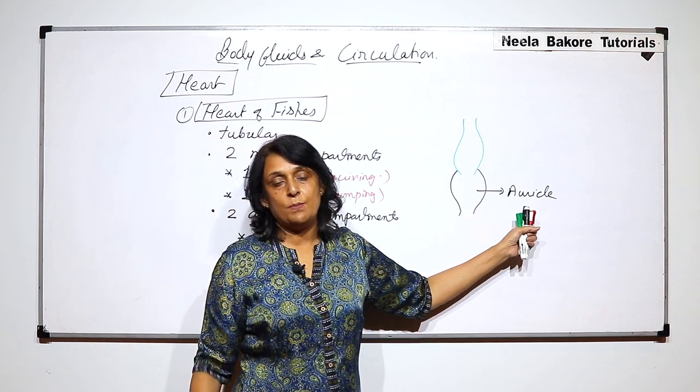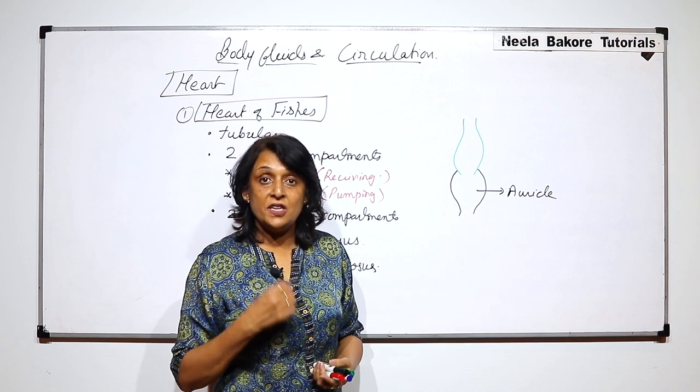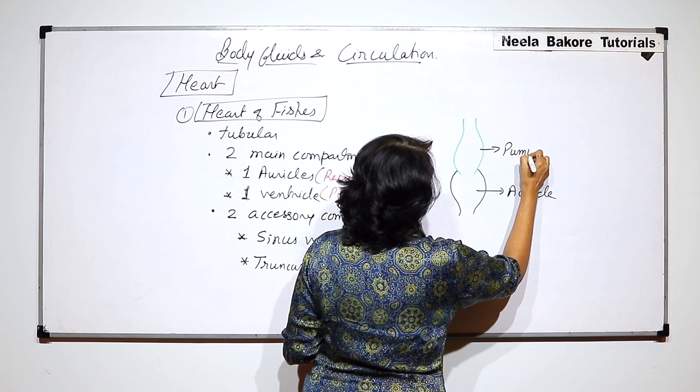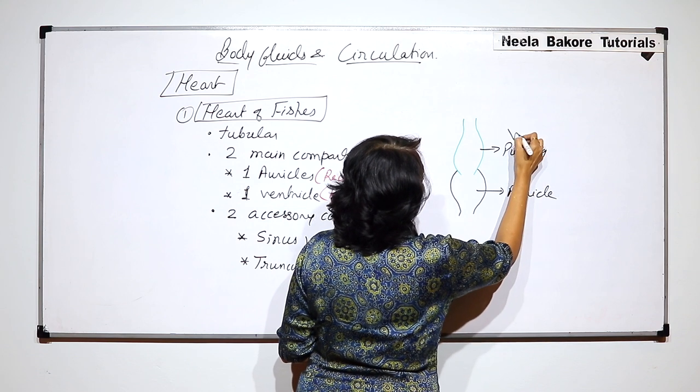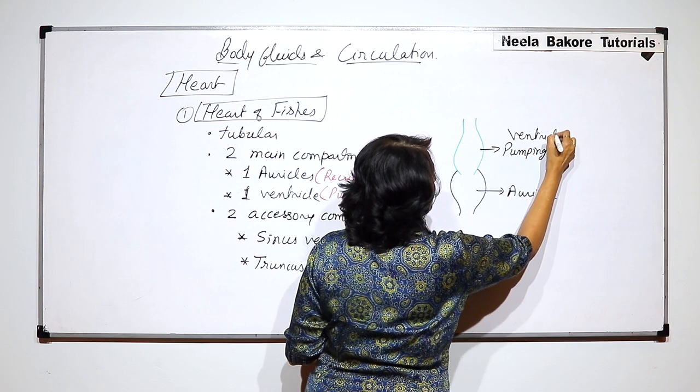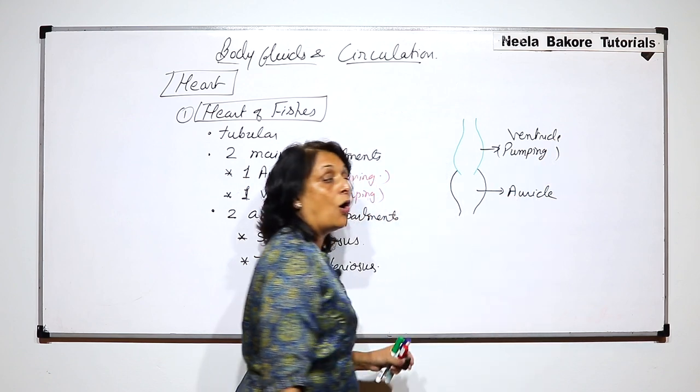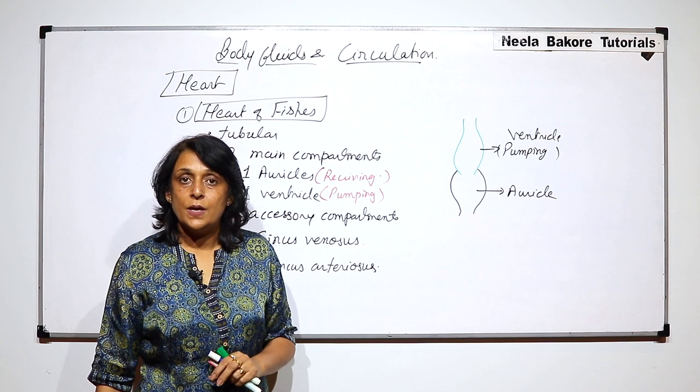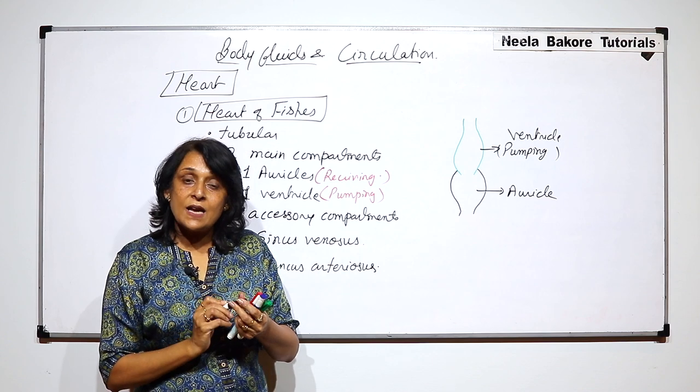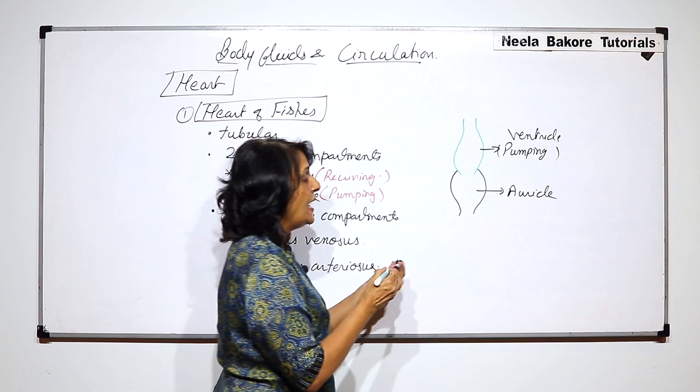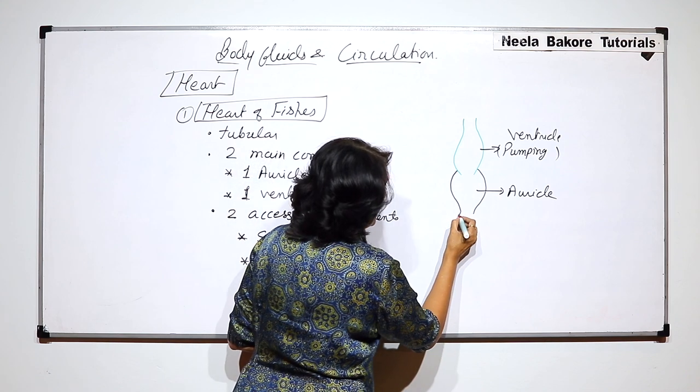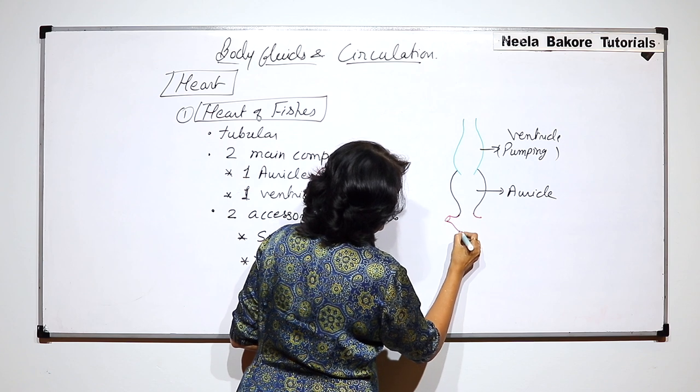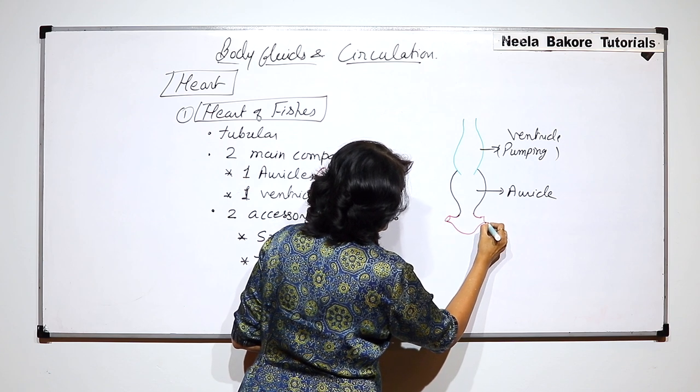So this is auricle. This means blood is here. This is receiving compartment. Pumping compartment, this means ventricle. And here are two main compartments, one auricle and one ventricle. Now where are accessory compartments? One accessory compartment is before auricle, and inside this compartment is sinus venosus.